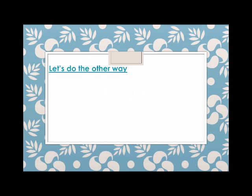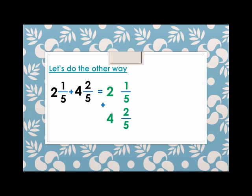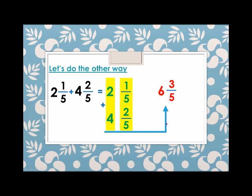Let's do this the other way — vertically. Two and one fifth plus four and two fifths: we add the whole numbers first, two plus four equals six, and then the fractions, one fifth plus two fifths equals three fifths. Therefore, two and one fifth plus four and two fifths equals six and three fifths.